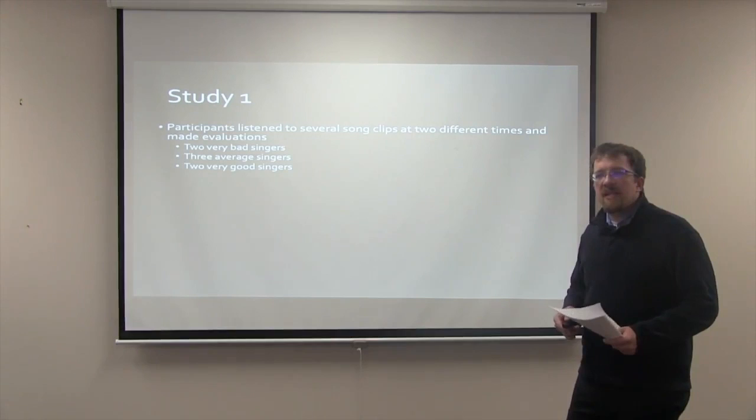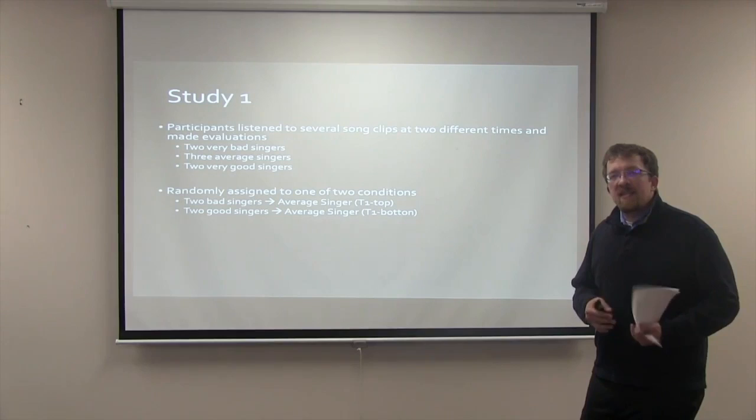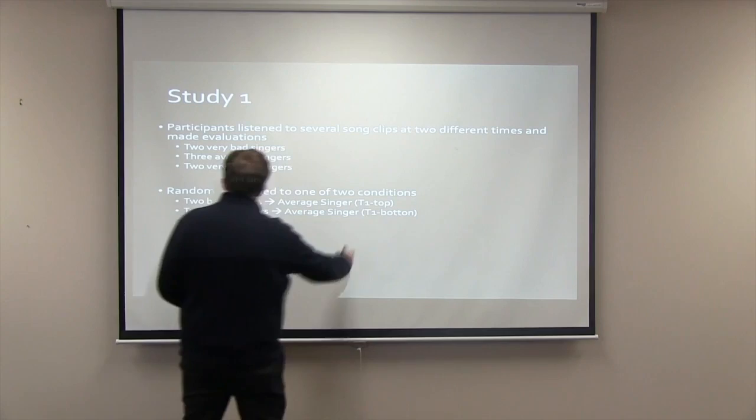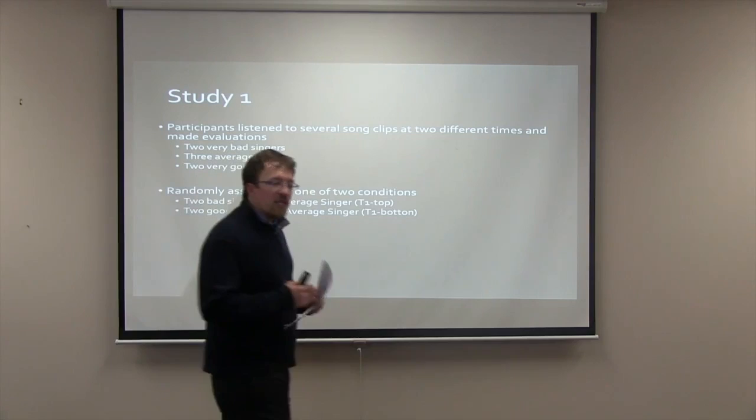Participants were randomly assigned to one of two conditions. In the first condition, called the T1 top condition, participants listened to two bad singers and then an average singer. In the second condition, called the T1 bottom condition, participants listened to two good singers and then an average singer. The reason for doing this was to make the average singer look relatively good or bad by comparison.